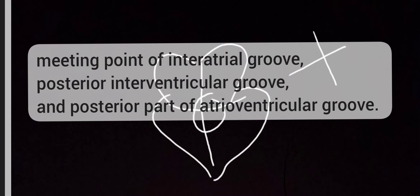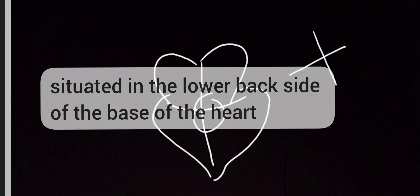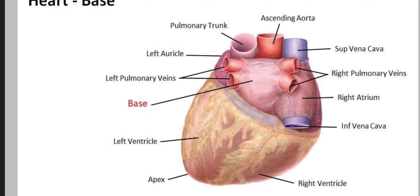Since crux means cross, the crux of the heart is the meeting point of the inter-atrial groove, the posterior interventricular groove, and the posterior part of the atrioventricular groove. It is situated on the lower backside of the base of the heart.